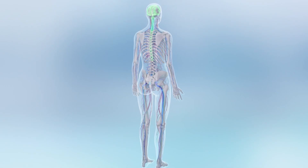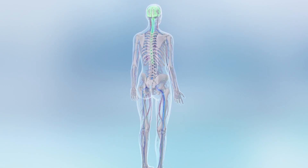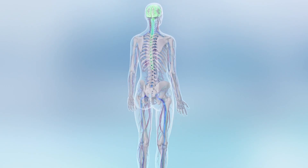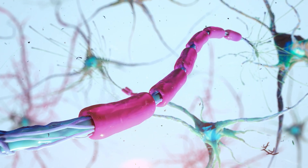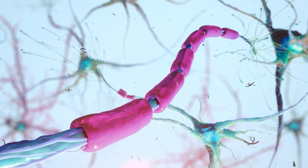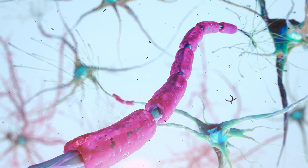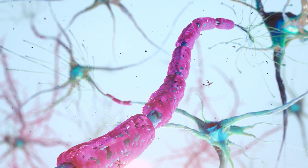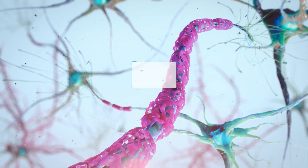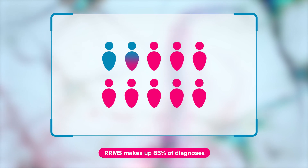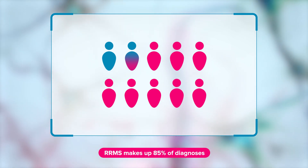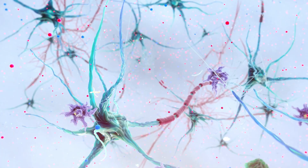Multiple Sclerosis, or MS, is a chronic autoimmune disease characterized by the demyelination of axons and formation of lesions or plaques within the central nervous system, CNS. Relapsing-remitting multiple sclerosis, or RRMS, is the most common disease course seen in MS patients, making up 85% of diagnoses.